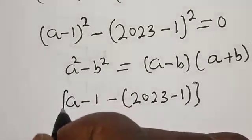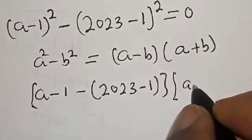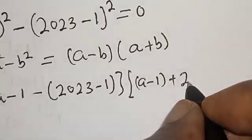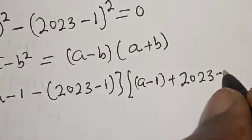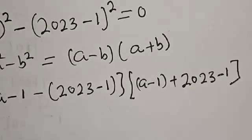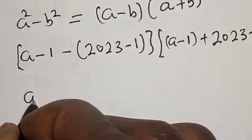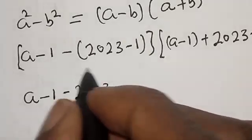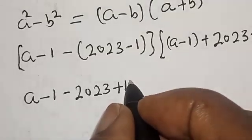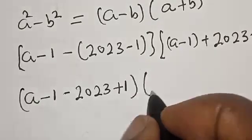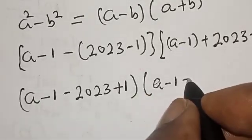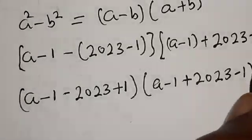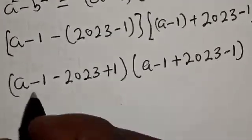From this side we have (a-1-2023+1) multiply by (a-1+2023-1). Here we have -1 and +1, this one will cancel.